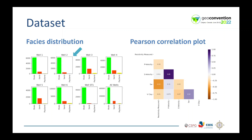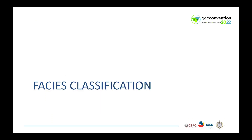The Pearson correlation plot shows that the data has no linearity, which is good for machine learning, except for VP and VS. Now let's go to the facies classification — the unsupervised and supervised.